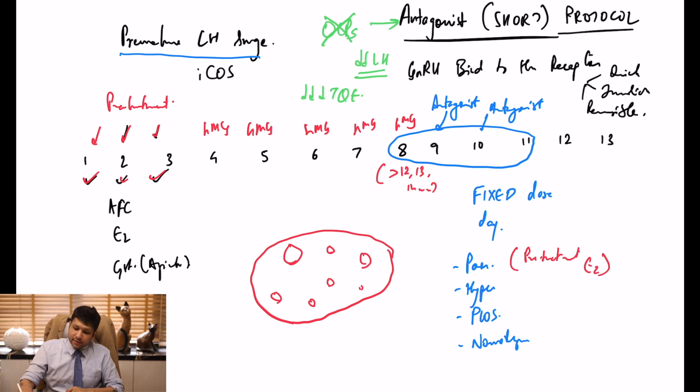One small criticism is that with antagonist protocol, the number of top quality embryos are lesser compared to agonist protocol, which may or may not be true. In our experience we use both protocols because we do controlled stimulation individually for each patient. We are extremely happy with the antagonist protocol.